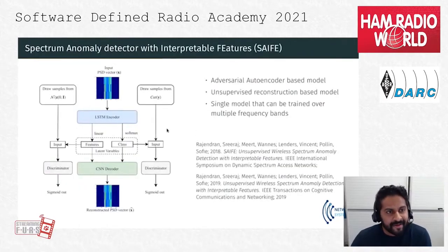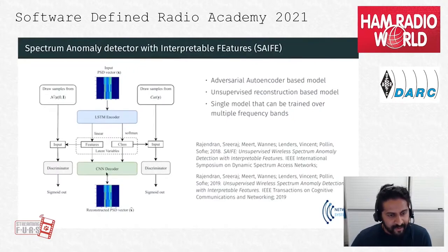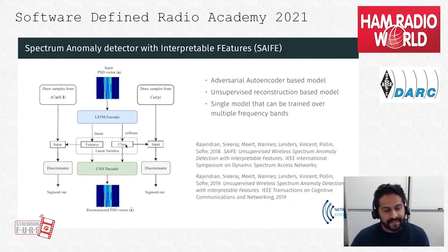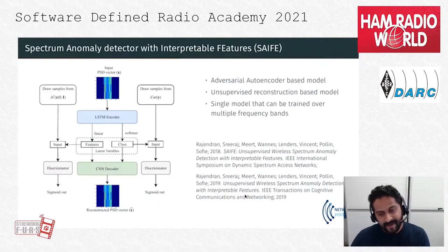Our actual model is called SAFE, an adversarial autoencoder based model. It takes power spectral density or spectrogram data as input, encodes it, and reconstructs it as output. The model is trained on reconstruction loss, with imposed distributions on the features and semi-supervised class variables identifying the frequency band. When there is a large reconstruction error or deviation from the expected distribution, it flags an anomaly. The model is open source on GitHub, with details in two published papers.